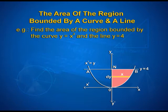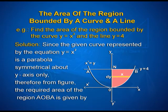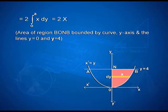Let us see an example: find the area of the region bounded by the curve y = x² and the line y = 4. Since the given curve y = x² is a parabola symmetrical about the y-axis only, from the figure the required area of the region AOBA is given by 2 × integral from 0 to 4 of x dy, which equals twice the area of region BONB bounded by the curve, y-axis, and the lines y = 0 and y = 4.